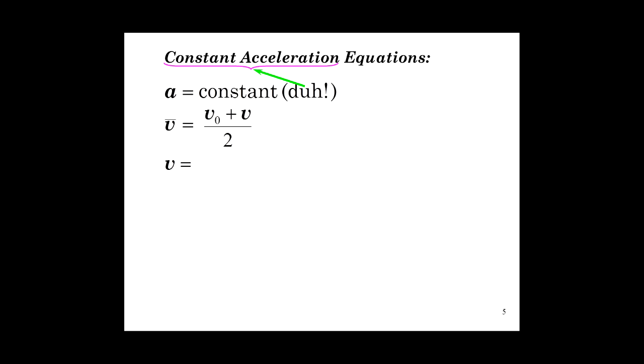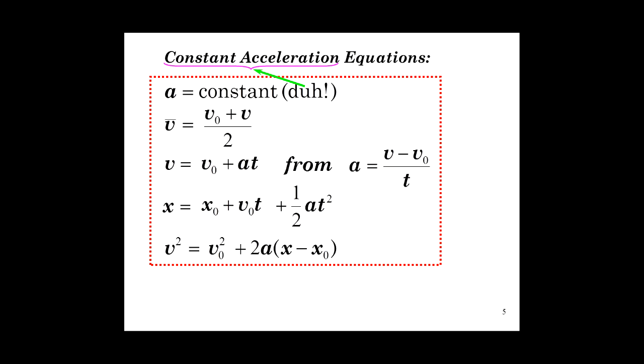The final velocity, or the instantaneous velocity at any given point, is the initial, plus acceleration times time. Now this comes from the basic definition of acceleration, delta v over t, or v minus v zero over t. What's the position? It's where it started out, plus the initial velocity times time, that's a displacement term. And then one half at squared. It should look familiar to you. Then finally, v squared is equal to v zero squared, plus 2a, times displacement.